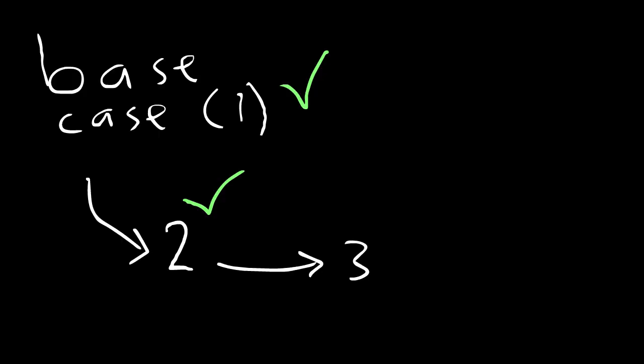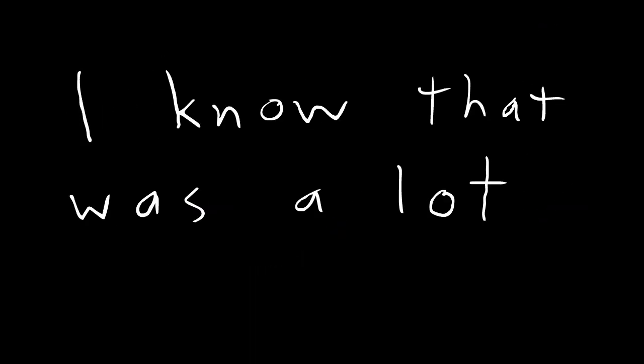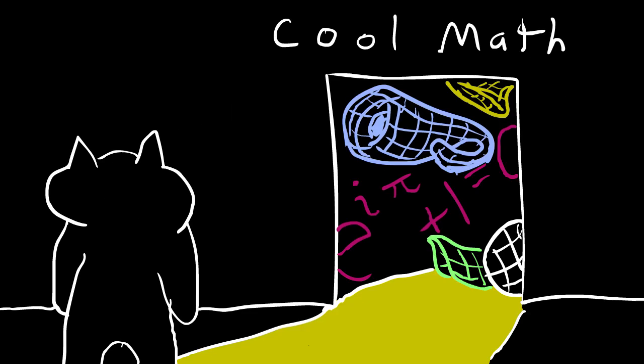So we've shown that if k is true, then k plus one has to be true, and you can then use your base case to build your proof inductively. Now, I know that was a lot, but I hope that it serves as a showcase of what higher level mathematics entails.